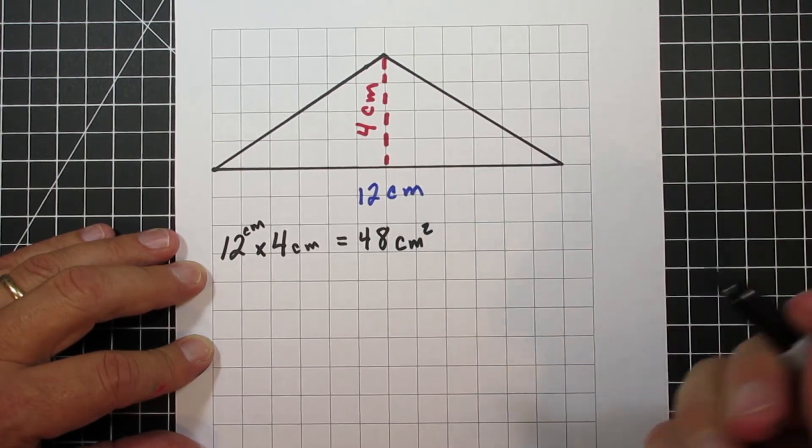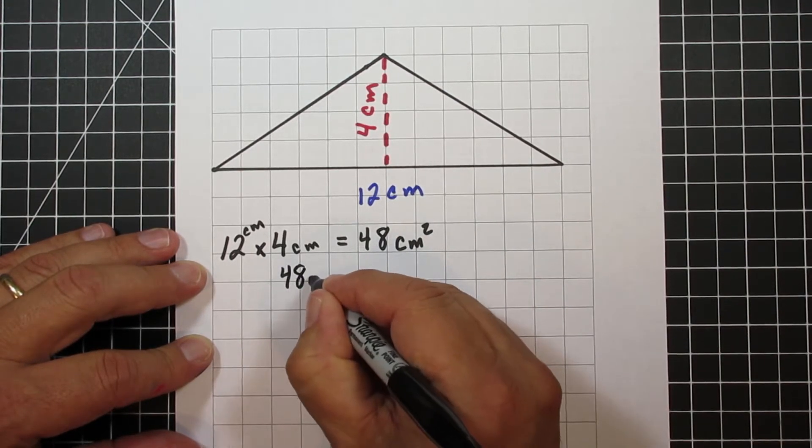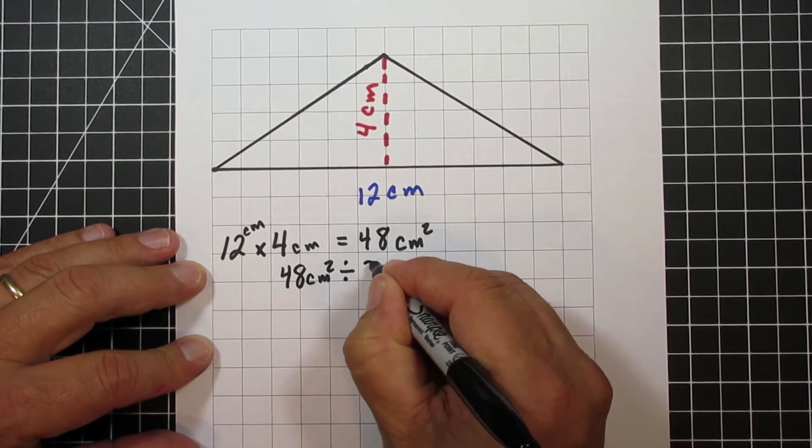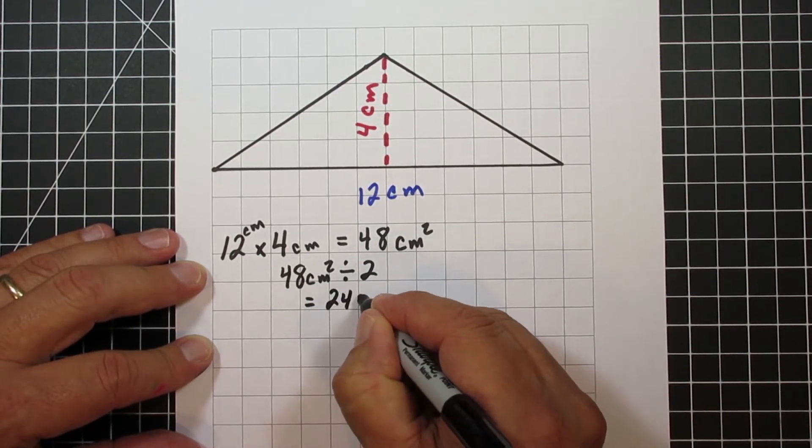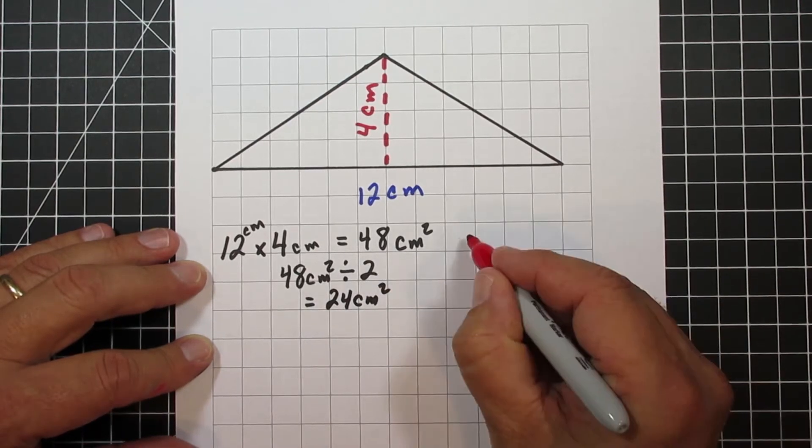So this triangle has a base of 12, height of 4. So you can see on this one, we're going to go 12 times 4, we get 48 centimeters squared, divided by 2, and that's going to give us an area of 24 centimeters squared.